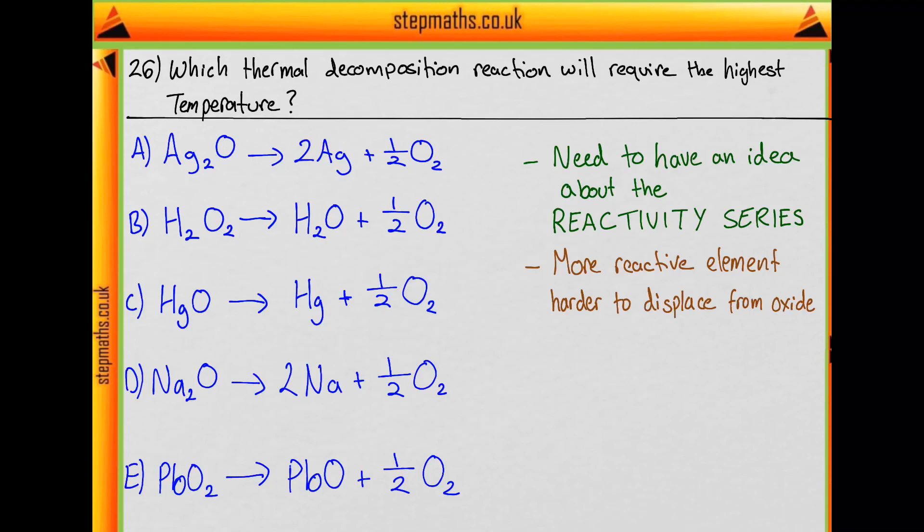The more reactive an element is, the less likely it will want to be reduced. So if you think about the reactivity series, you should know that the elements at the top, i.e. the most reactive element, will be the group 1 elements.